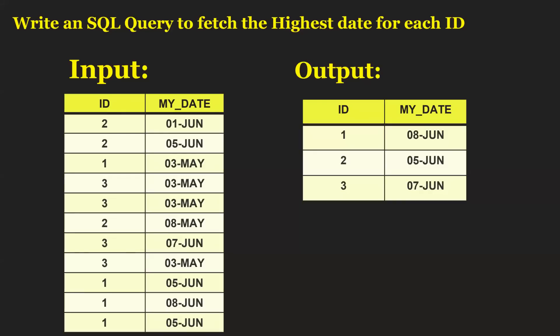Hello friends, welcome to SR Technologies. Today we are going to discuss another SQL interview question which is asked in an MNC company. The input here has two columns: id and my_date, with 11 rows. If you observe, id value 2 appears two to three times, id 3 appears four times, and id 1 appears four times. The my_date column is a VARCHAR2 column.